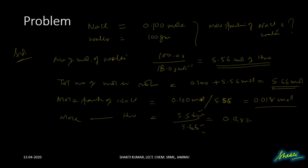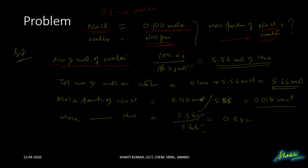Now let us take a problem. We take 0.100 moles of NaCl dissolved in 100 grams of water, and we have to find the mole fraction of NaCl and the mole fraction of water. First, we calculate the number of moles of water: 100 grams divided by the molar mass of water, which is 18 grams per mole. The result is 5.56 moles.